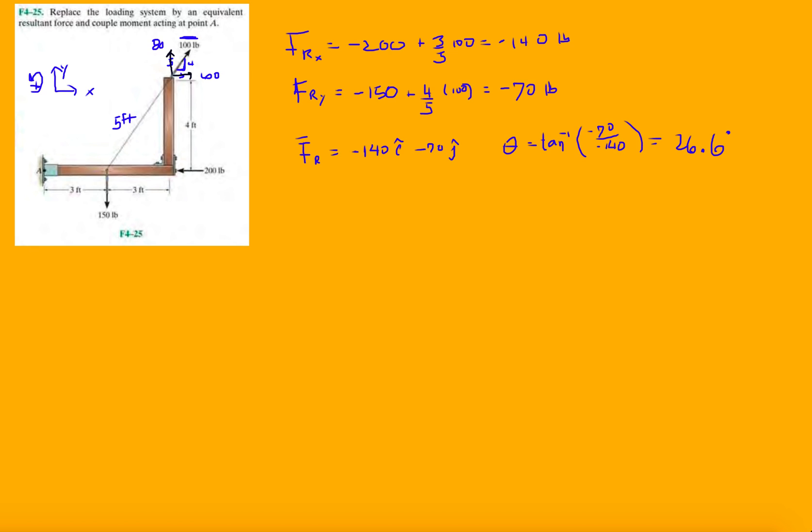Now at point A I'm going to place - let's make a new structure. This is the structure, and I've taken off all those forces. I'm gonna put the -70 and the -140 here. The angle that this makes is 26 degrees.